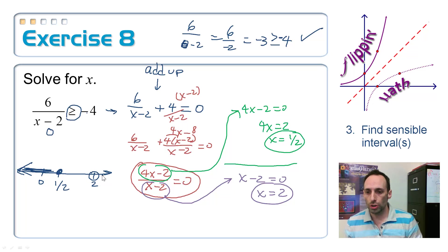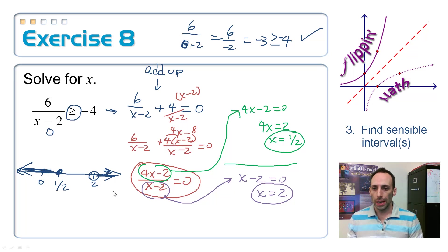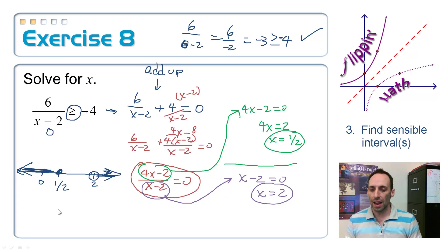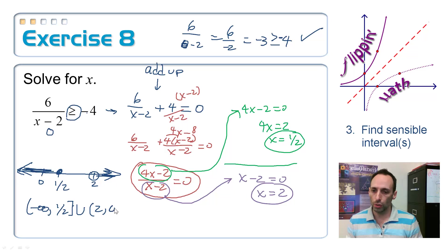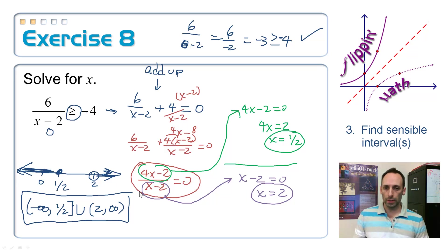So I write this in interval notation as (−∞, 1/2] ∪ (2, +∞). The 1/2 gets a bracket, and 2 gets a parenthesis. That's my final answer.